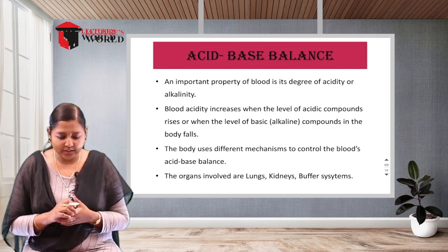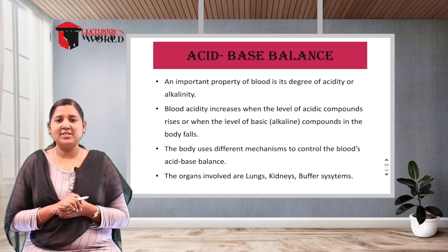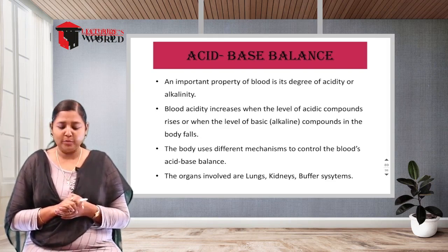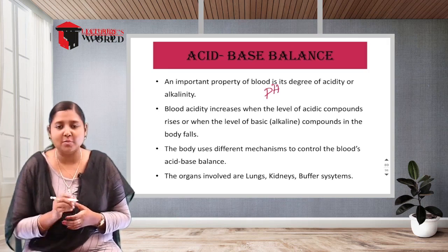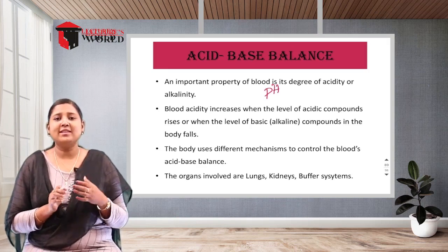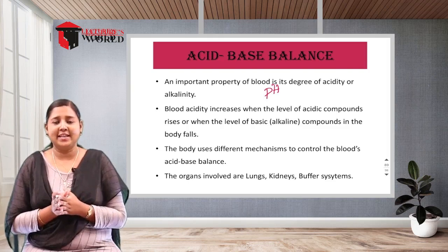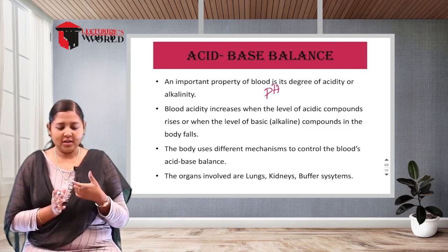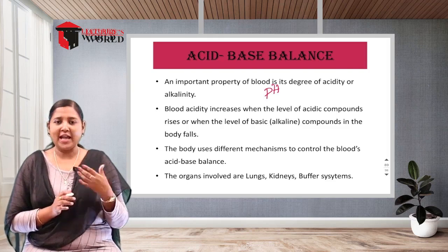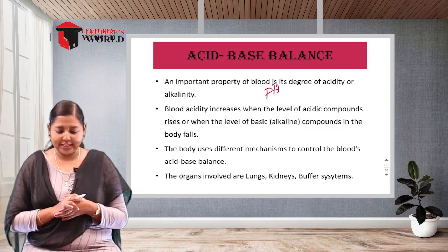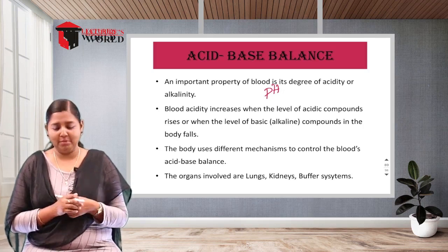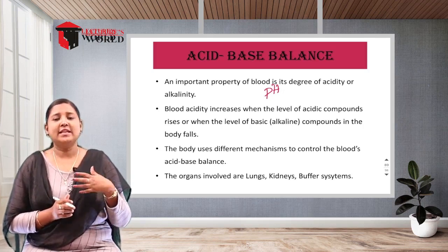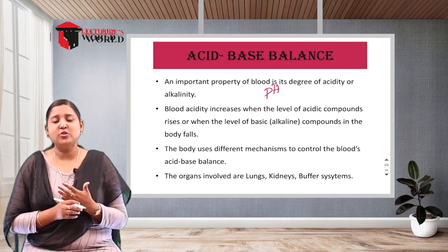An important property of blood is its degree of acidity and alkalinity, which we call the pH value. To say that blood is acidic or alkaline, we look at the pH. The acids and bases present in the blood — their increasing or decreasing levels — tell us whether the blood is alkaline or acidic.